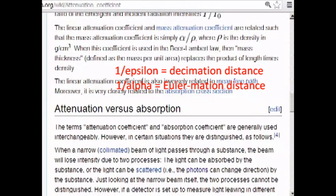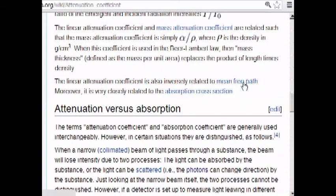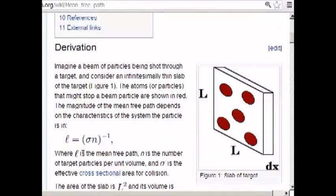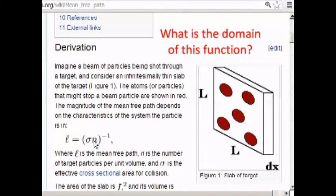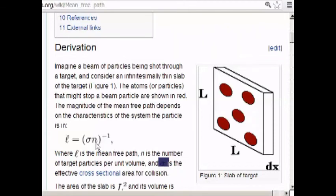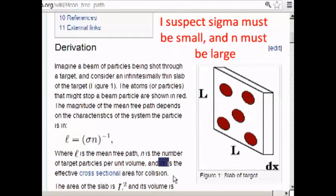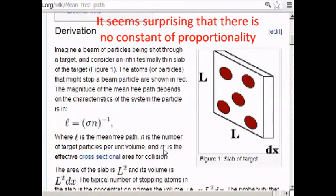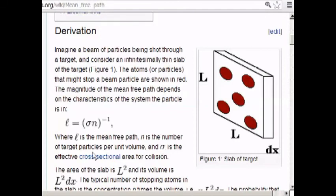So linear attenuation coefficient is also inverse related to the mean free path, which is given here, where l is the mean free path, n is the number of target particles per unit volume, and sigma is the effective cross-sectional area for a collision. So the mean free path of a photon, because here we have photons colliding with molecules.